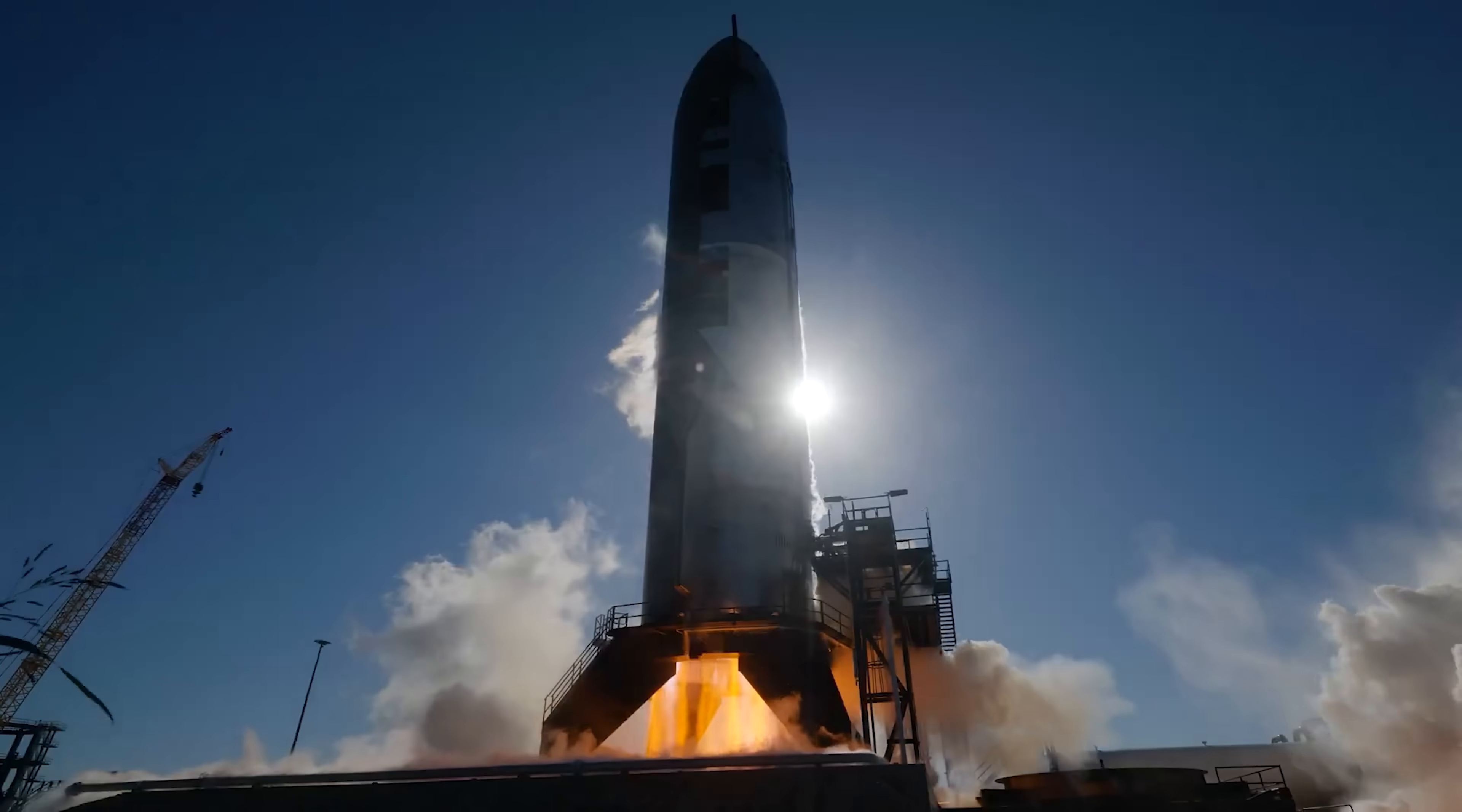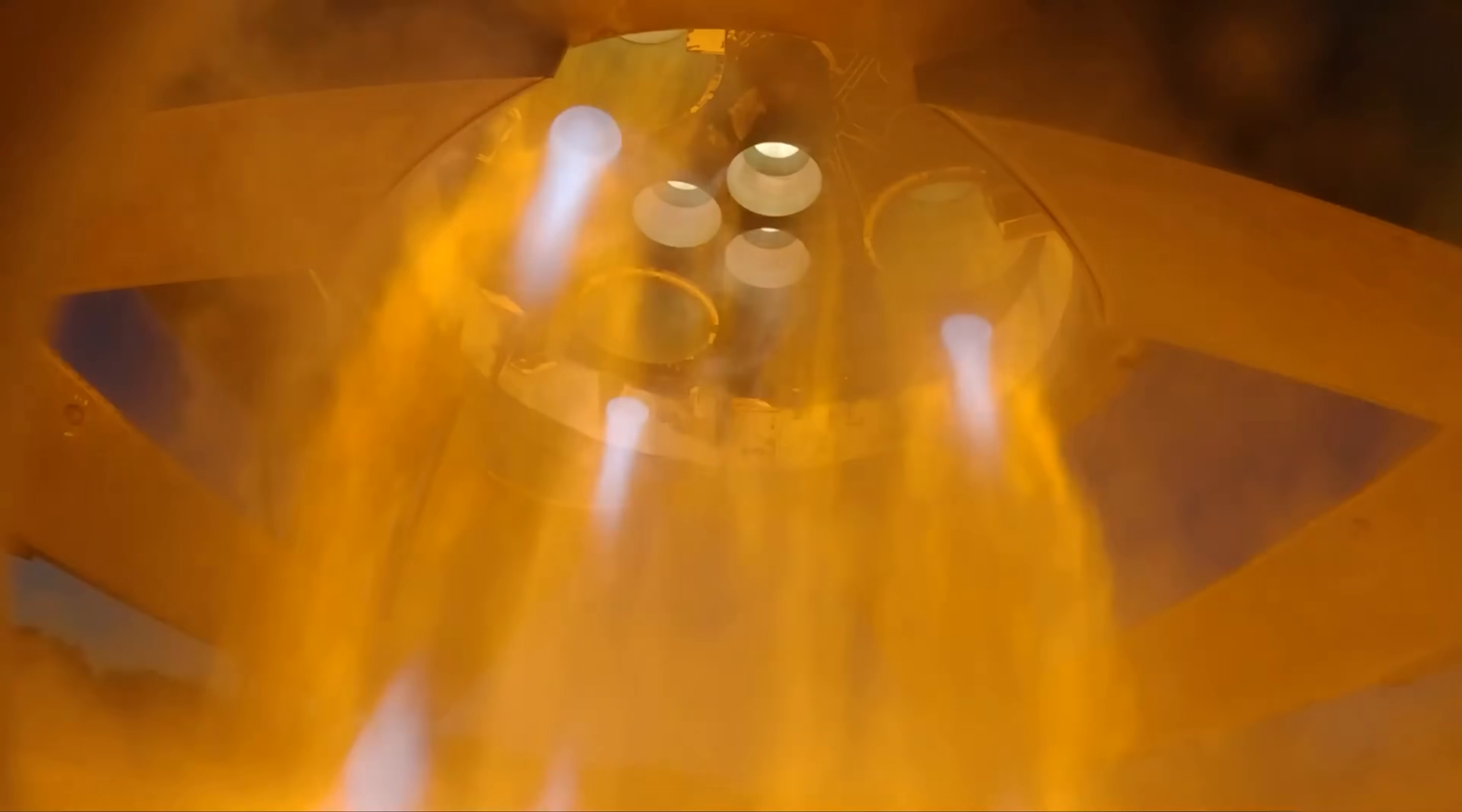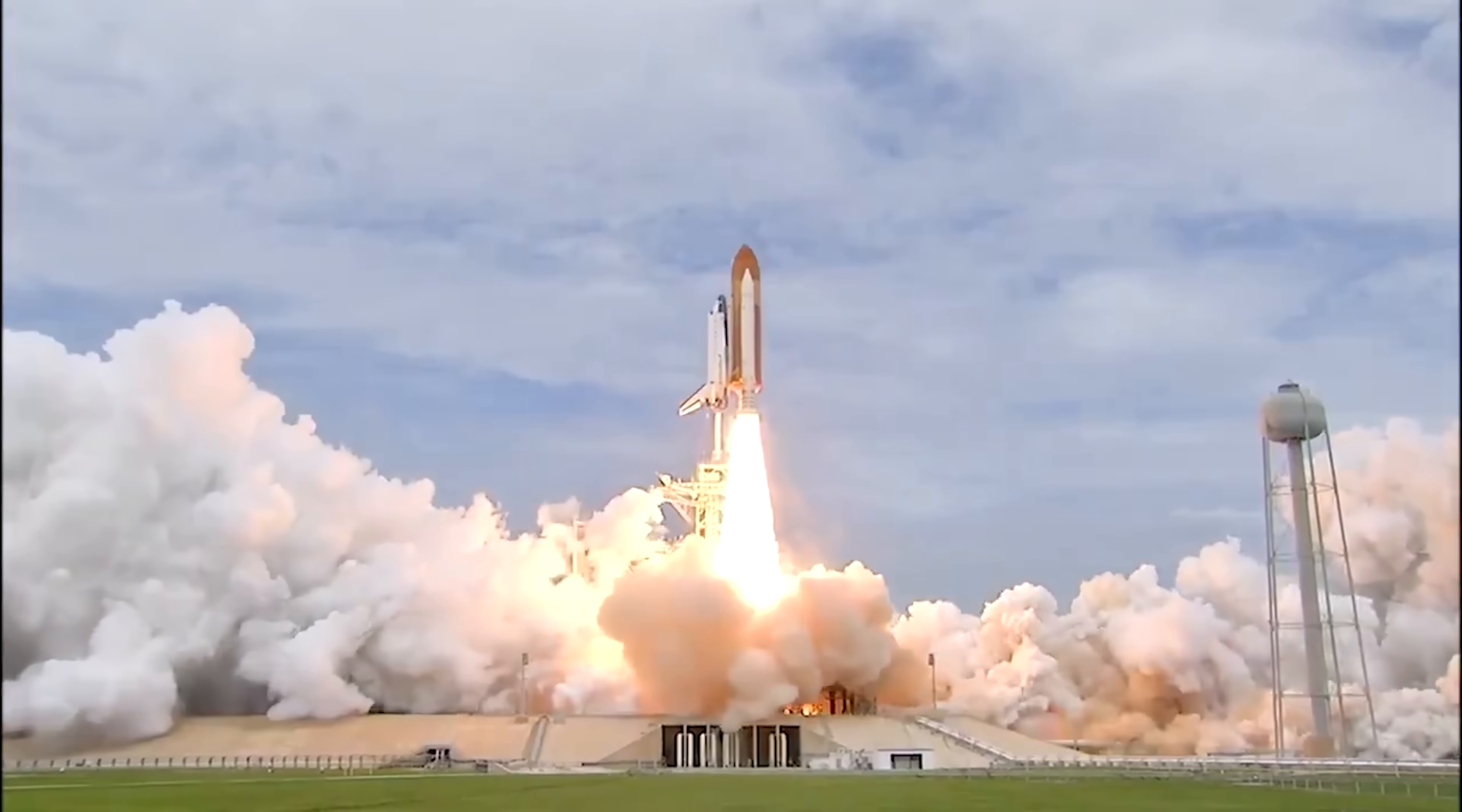Meanwhile, the Starship upper stage has received modest but meaningful upgrades. It now measures 52.1 meters in length and holds 1,550 tons of propellant. This is an increase of 50 tons over the Starship II specifications released in April 2024. The vehicle now delivers 1,600 tons of thrust. Block III Starships will also include an upgraded fully reusable heat shield. Elon Musk has emphasized that achieving full heat shield reusability is incredibly difficult. This is something even the space shuttle never accomplished.